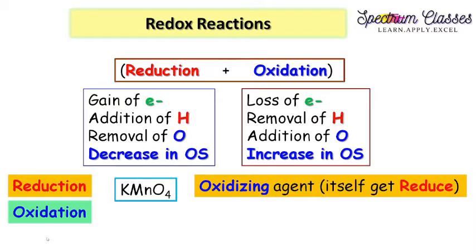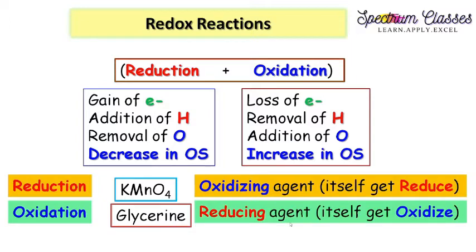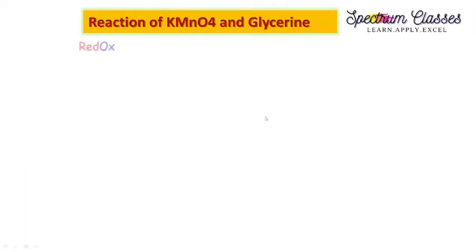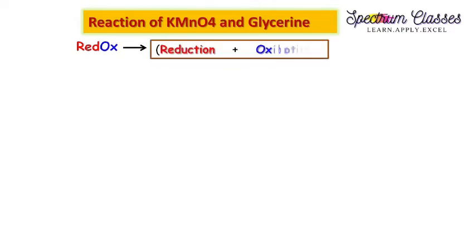Now we discuss the oxidation of the other reactant. Glycerine works as a reducing agent, but it itself gets oxidized. How? Glycerine provides electrons to KMnO4, so because of this glycerine, KMnO4 gets reduced — that is why glycerine is called a reducing agent. This reducing or oxidizing tendency is described with respect to the other reactant present in the reaction.